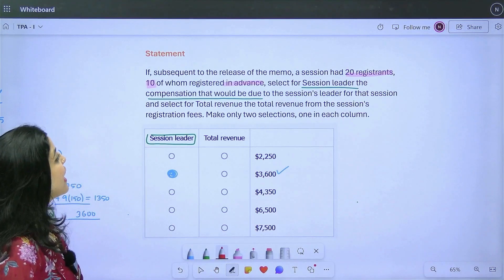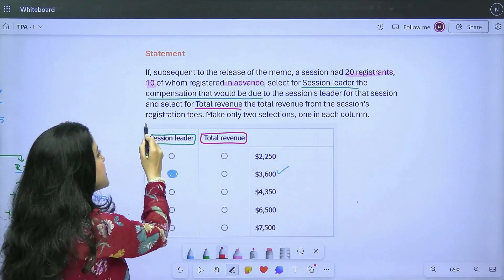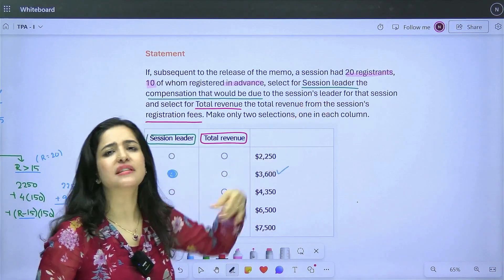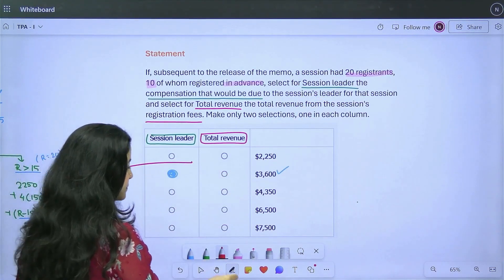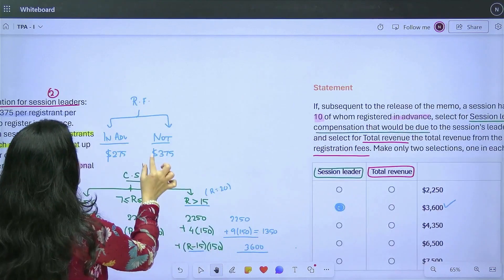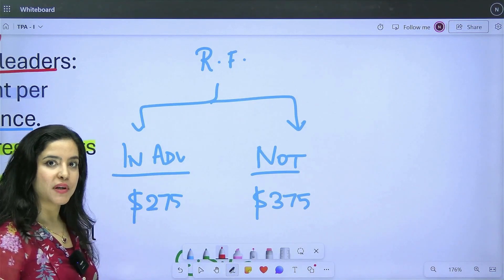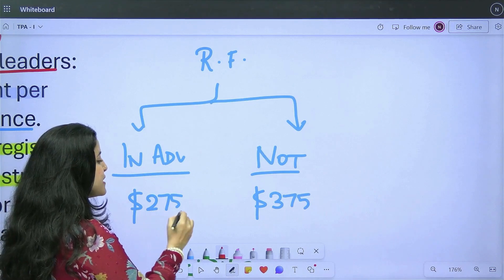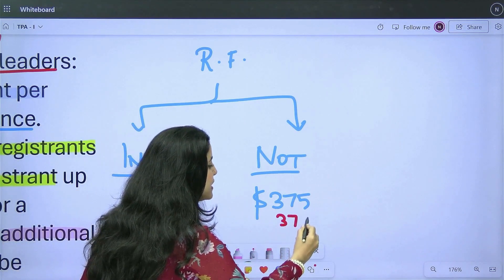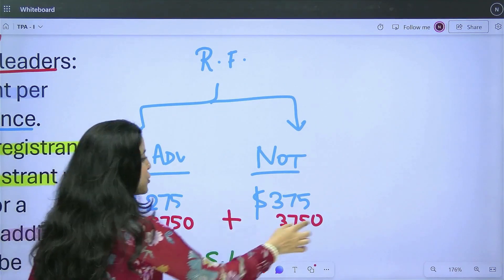Now, let's read further. What's it asking? And select for total revenue. That means select for the second column. Select the total revenue from the session's registration. That means don't think about just one person's registration fees anymore. It's 20 that you have. Just tell me the total that you're getting from there. Again, you know exactly how to work this. You're going to this time work only on the registration fee part. I know 10 of them registered in advance and 10 of them did not. So, for the people who did it 275 times 10. This is going to give me 2750. Similarly, 375 times 10 will be 3750. So, the total revenue will be the sum of these two. It's a simple addition and when you do add this, you're going to get 6500.